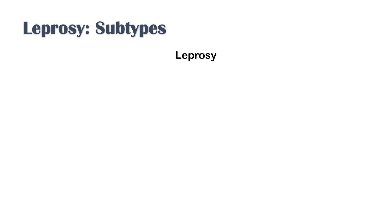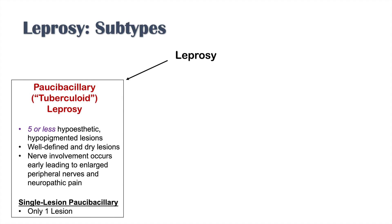There are three subtypes. The first is paucibacillary, or tuberculoid leprosy — characterized by five or fewer hypopigmented, hypoesthetic, well-defined, and dry lesions. Nerve involvement in paucibacillary leprosy occurs early, leading to enlarged peripheral nerves and neuropathic pain. There is also a single lesion paucibacillary subtype with just one lesion.